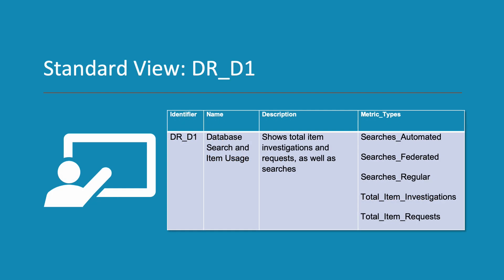Standard view DR-D1 shows total item investigations and requests as well as searches. The metric types in this report are searches automated, searches federated, searches regular, total item investigations, and total item requests.